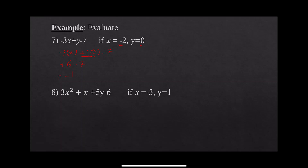Example 8: 3x squared plus x plus 5y minus 6, with x equals negative 3 and y equals 1. Replace all x's and y with brackets: 3 times bracket squared, plus bracket, plus 5 times bracket, minus 6. Substitute negative 3 for x and 1 for y. Keep the square: negative 3 squared equals 9, since the exponent is even the answer is positive.